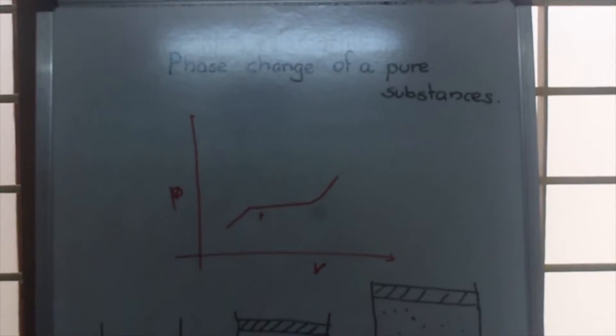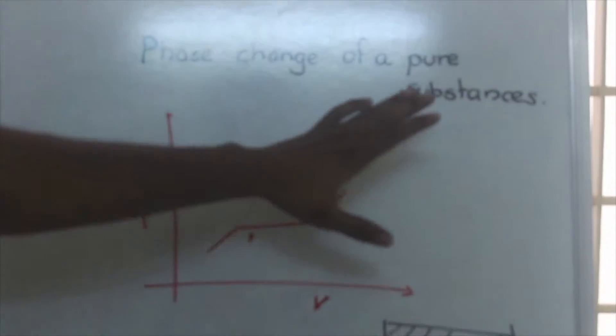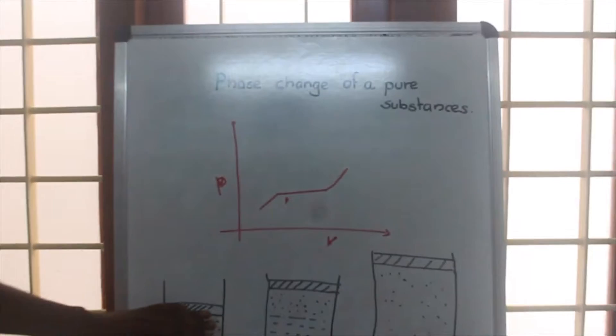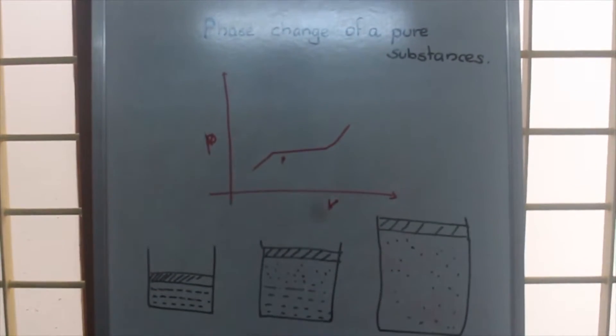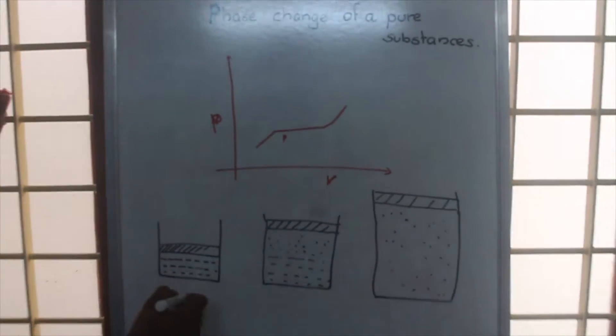Now we are going to look at the PV diagram of phase change of a pure substance. Here in this piston cylinder arrangement, we are having water in it.